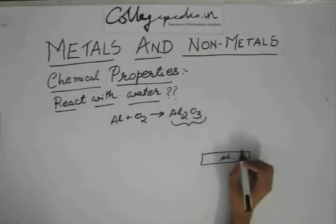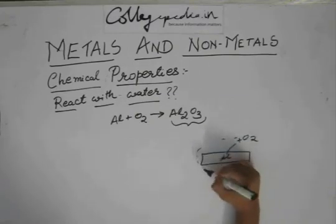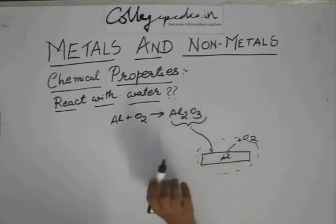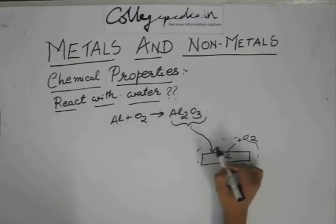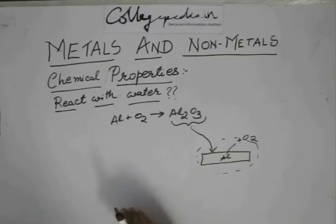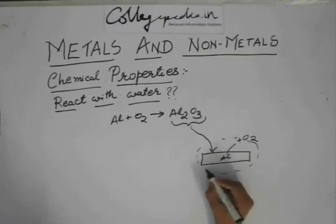If you have a pure aluminum rod and you keep it in air, this aluminum reacts with the oxygen present in air to give Al2O3. This Al2O3 comes and settles onto this aluminum rod.